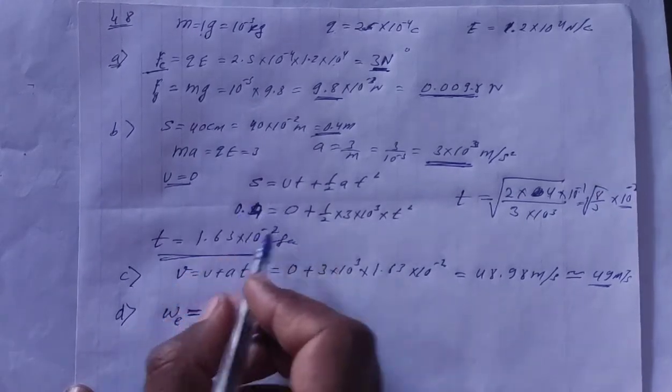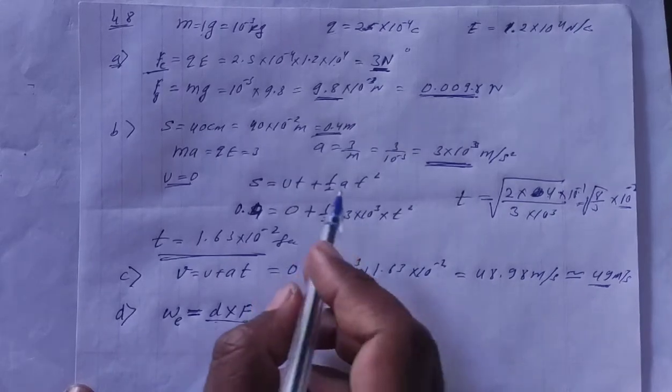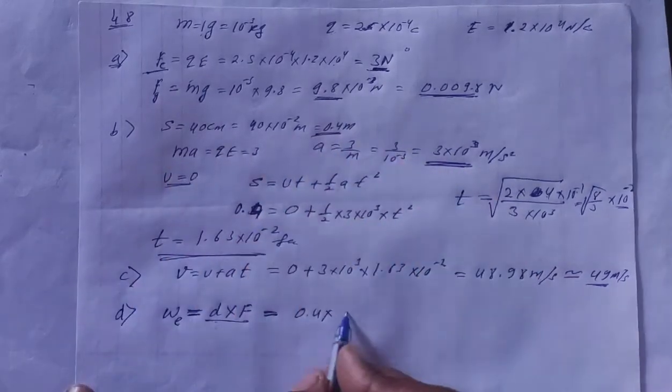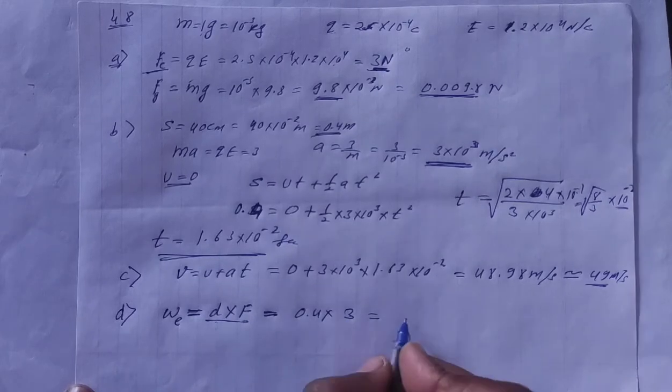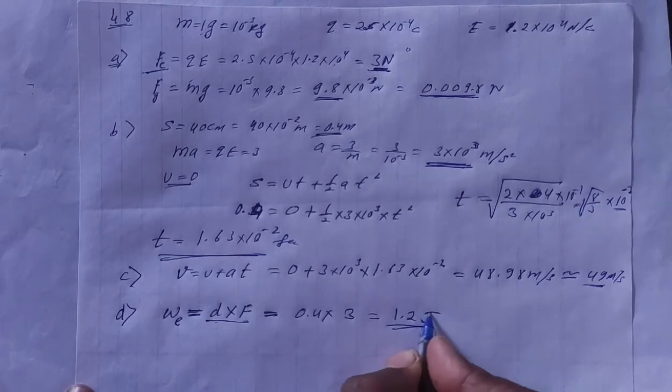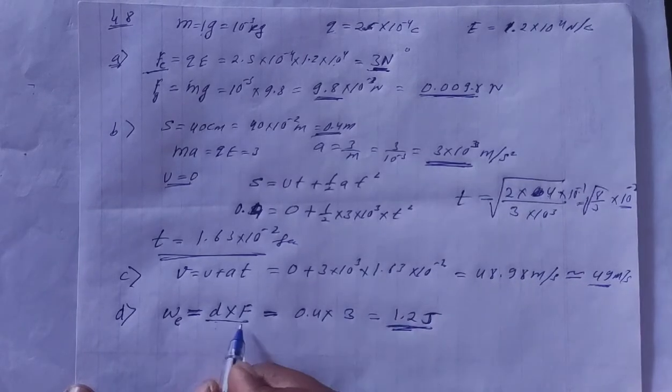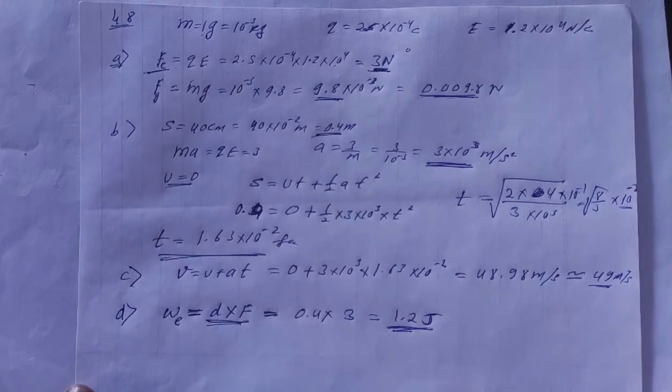What is the distance? That's already given, 0.4 meter. And force, what is the force? Force is 3 newton. So solving this, we get 3 into 4 is 12, that is 1.2 joule. How much work? 1.2 joule. And what kind of work? Positive, because the direction of force and the direction of displacement are the same.